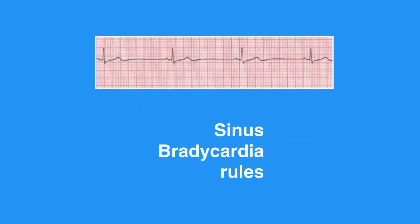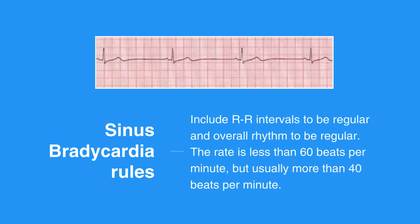Sinus bradycardia rules include R-R intervals to be regular and overall rhythm to be regular. The rate is less than 60 beats per minute but usually more than 40 beats per minute. There is one P wave in front of every QRS, and they appear uniform. The PR interval measures between 0.12 and 0.20 seconds in duration and is consistent. The QRS complex measures less than 0.12 seconds.